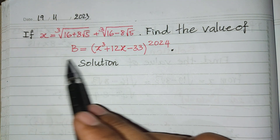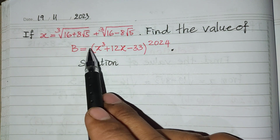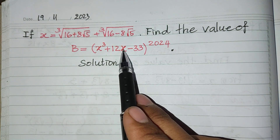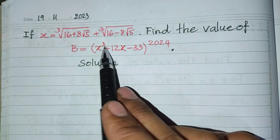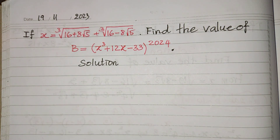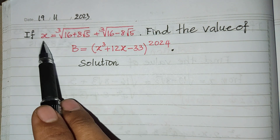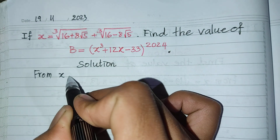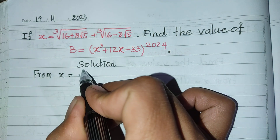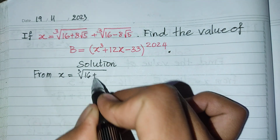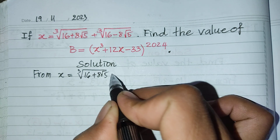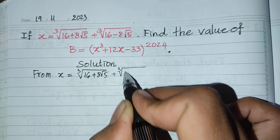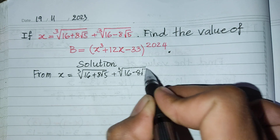To find the value of expression b, we have h³ + 12h. If we replace h directly, it's very difficult. So I have one trick. We use the fact that h equals cube root of (16 + h√5) plus cube root of (16 − h√5), and we cube both sides of this equation.